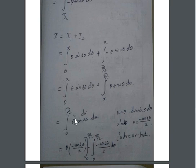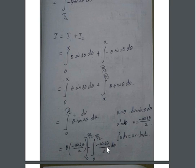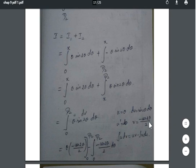This integral is of the form ∫u dv, so we use integration by parts: ∫u dv = uv − ∫v du. Let u = θ, so du = dθ. Let dv = sin 2θ dθ, so v = −cos 2θ / 2. Applying the formula: [θ · (−cos 2θ / 2)] from 0 to π/2, minus the integral from 0 to π/2 of (−cos 2θ / 2) dθ.